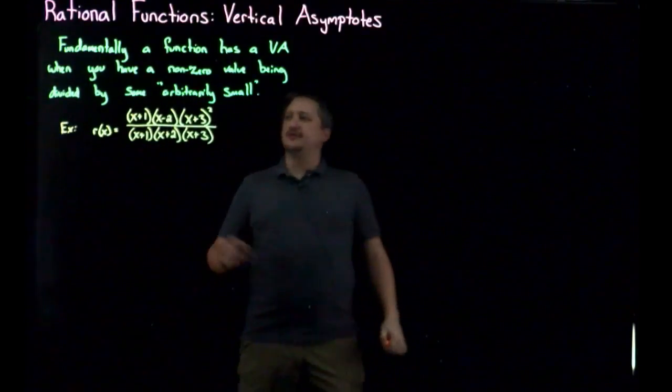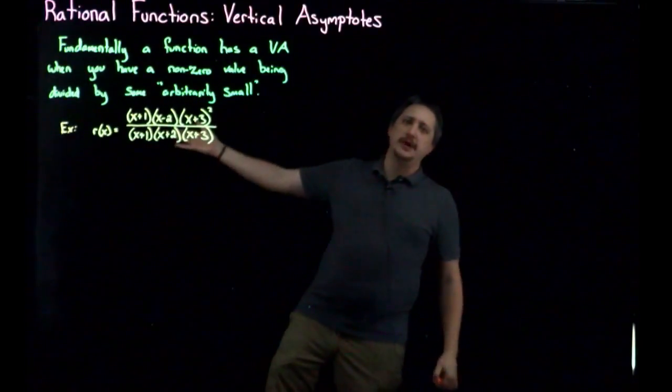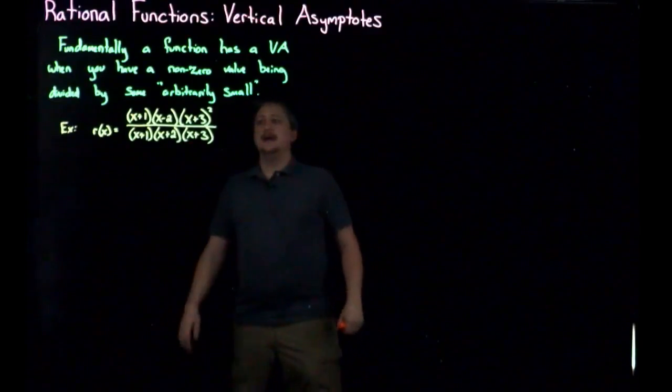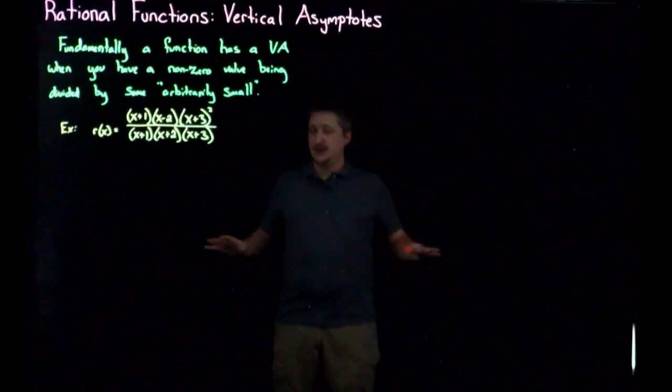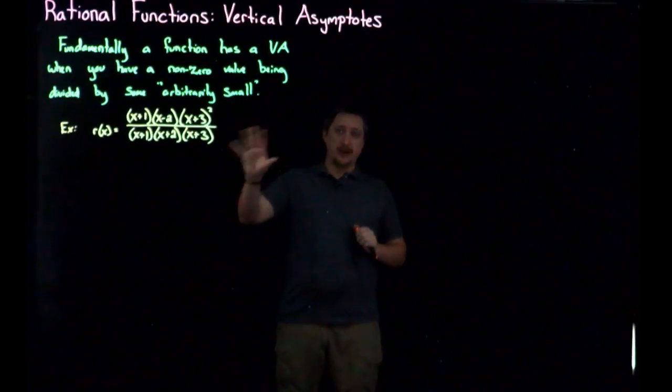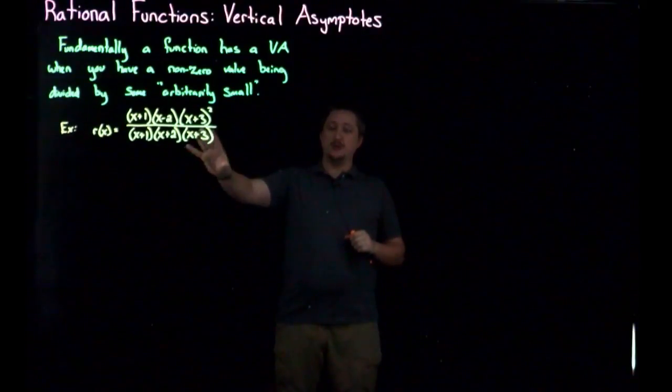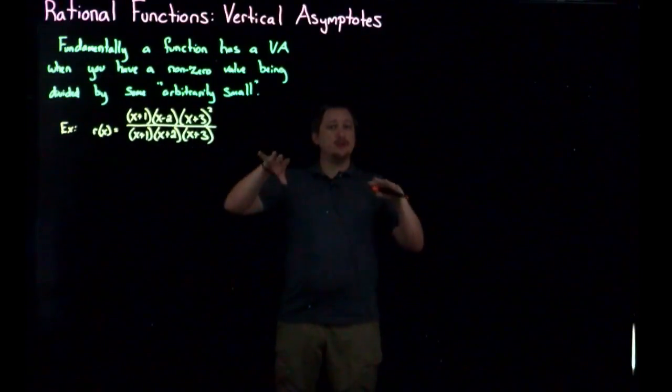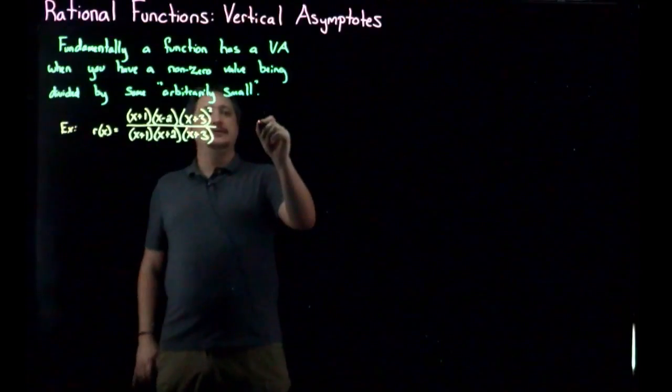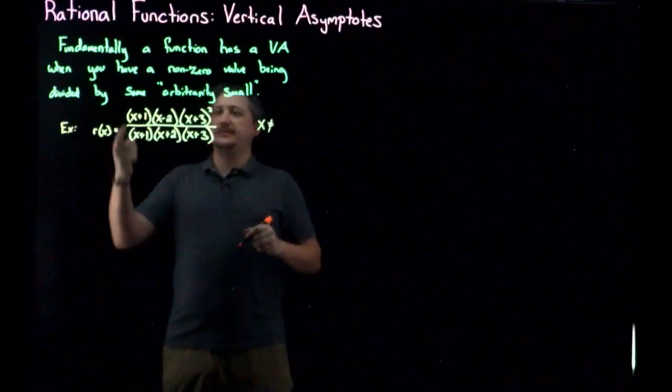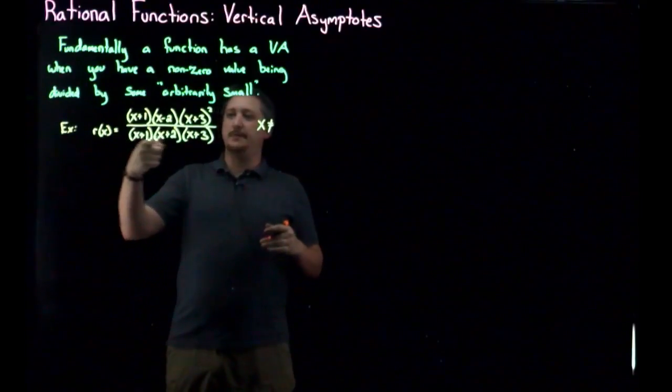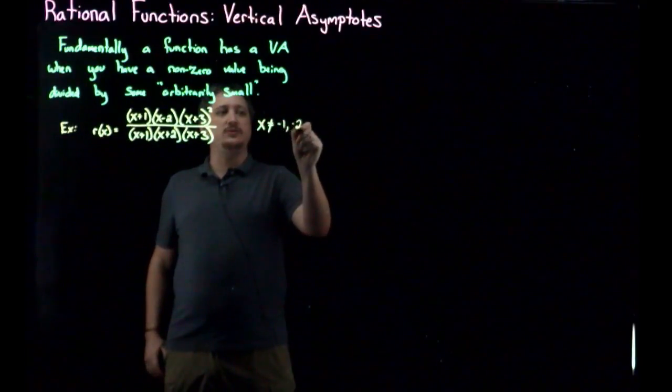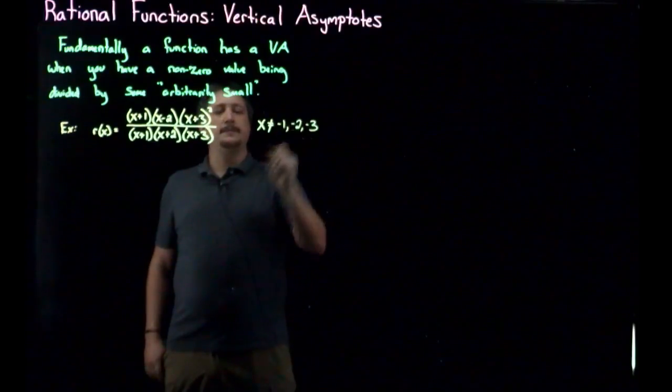Okay, so we pretend for a second we had some ugly polynomial top and bottom, we did all the factoring and we get here. Now, a key thing here is the domain is something that you figure out before doing any simplifying. So the domain is something that we would find out right away after you factor, but before you simplify anything. So here my domain, x can't be—the top and bottom are polynomials, so I don't have to worry about that, but I can't divide by zero. So I need the bottom to be non-zero, so x can't be negative 1, negative 2, or negative 3.